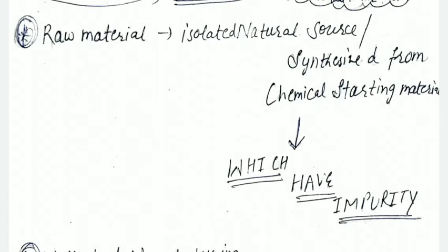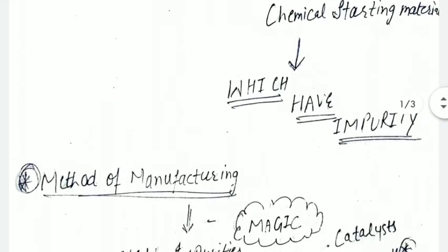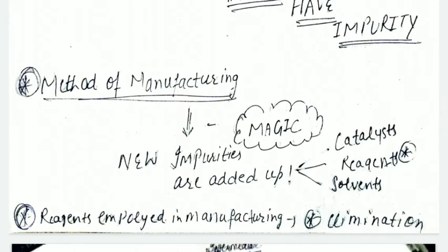Second is method of manufacturing. The impurities that are present in raw material can remain, but what's interesting is that there are new impurities that are added during manufacturing. So it can add new impurities.